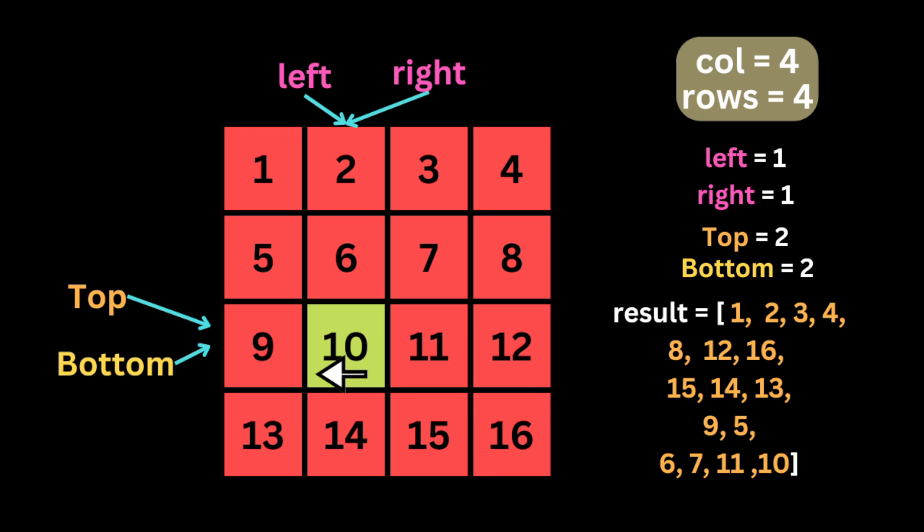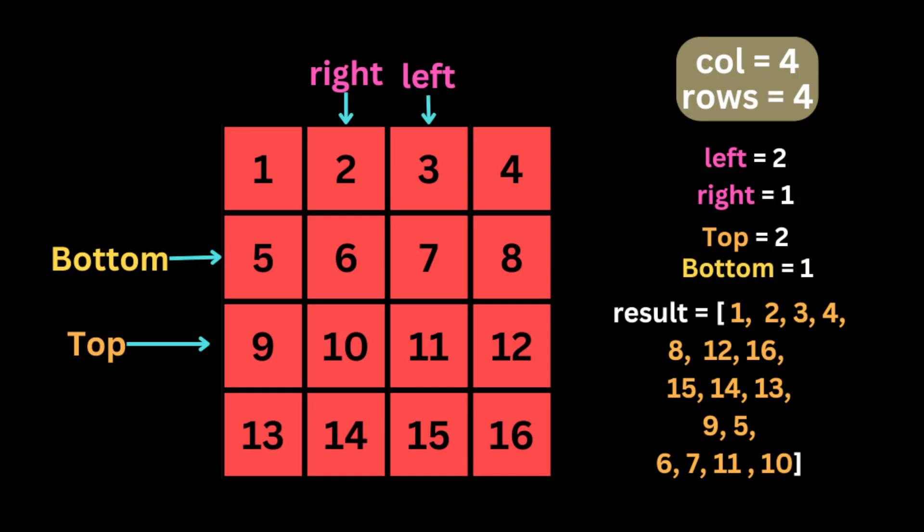We move the right pointer to the previous column. Then we check if top has passed bottom; if not, we visit the last number inside the matrix, which is 10. Finally, we move the left pointer past the right pointer so we can return the result and stop the iteration.